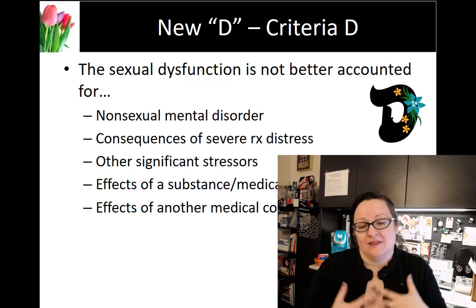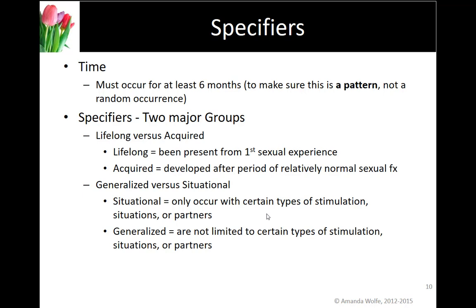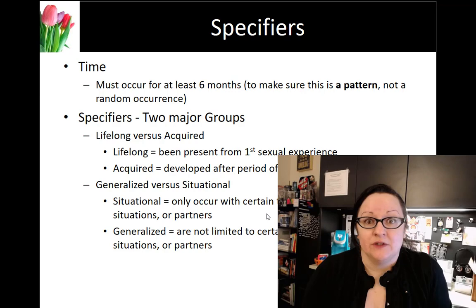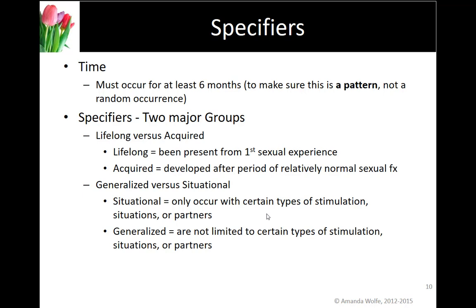All sexual dysfunctions must occur for at least six months to ensure this is a pattern of behavior and not a random occurrence — everybody has a bad day and we don't diagnose a single bad day. DSM-5 also includes specifiers. The first is lifelong versus acquired, and the second is generalized versus situational. Acquired means it came after a period of normal functioning; lifelong means your whole life. Situational means in a certain situation; generalized means in all situations.